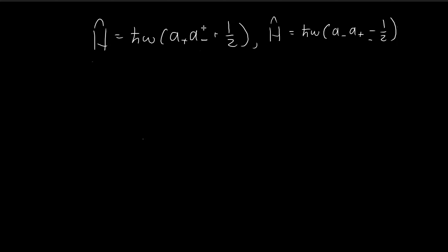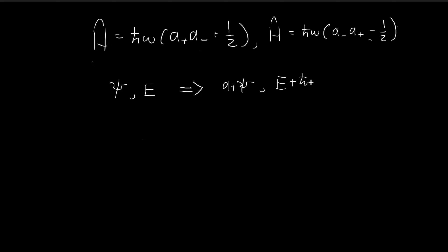Moving on with our derivation, the next thing we're going to do is make a claim. I'm going to claim that if there is a function ξ that satisfies the time-independent Schrödinger equation with energy level E, then the function a-plus ξ — that is, the a-plus operator applied to ξ — also satisfies the Schrödinger equation with an energy level of E plus ℏω.